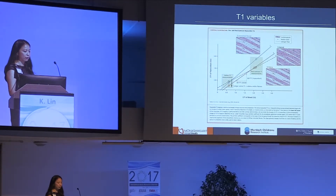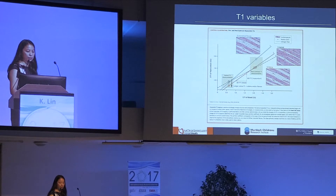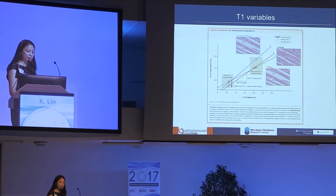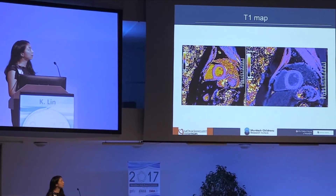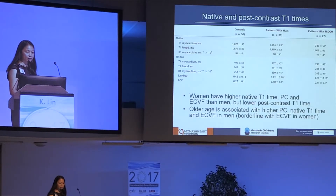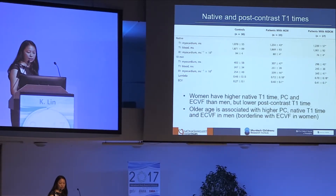A review by Dr. Taylor shows different patterns of T1 variables: the black dashed line represents normal myocardium, compared to the fibrotic heart shown in blue, and a predominantly edematous heart also shows a different slope and pattern of native and post-contrast T1 measurements. In normal individuals, women have higher native T1 times, partition coefficients, and extracellular volume fractions than men but lower post-contrast T1 times, and older age is associated with higher partition coefficients, native T1 times, and extracellular volume fractions, especially in men.